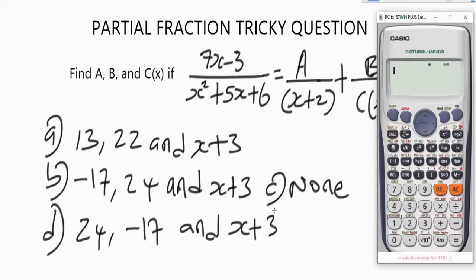If you look at the options we have here, what these values mean is that the alphabet A stands for a number, and the alphabet B stands for a number. We are going to store A as 13 on the calculator, store B as 22 on the calculator, and store 2 as X to replace X in the expression X plus 3. We'll do the simplification and see if we get an output that equals what we have at the left-hand side of the equation — that's 7X minus 3 over X squared plus 5X plus 6. Let's begin, step by step.